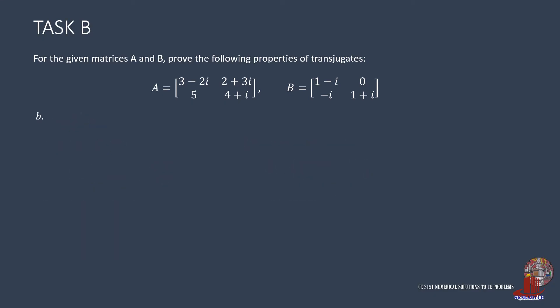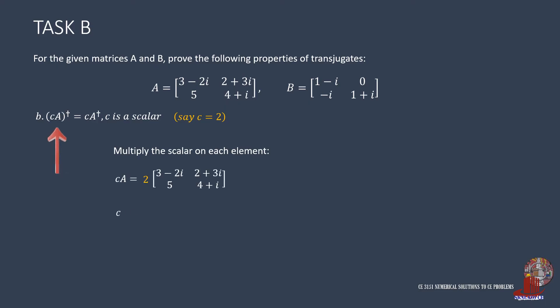Task B has the property stating that the transjugate of C times A equals the scalar C times the transjugate of matrix A. To make the proving simpler, we assume C as 2. We focus on solving the left expression where we multiply matrix A by 2, which is just to multiply all elements by 2. C times matrix A then has element 1,1 as 6 minus 4i; element 2,1 as 10; element 1,2 as 4 plus 6i; and element 2,2 as 8 plus 2i.